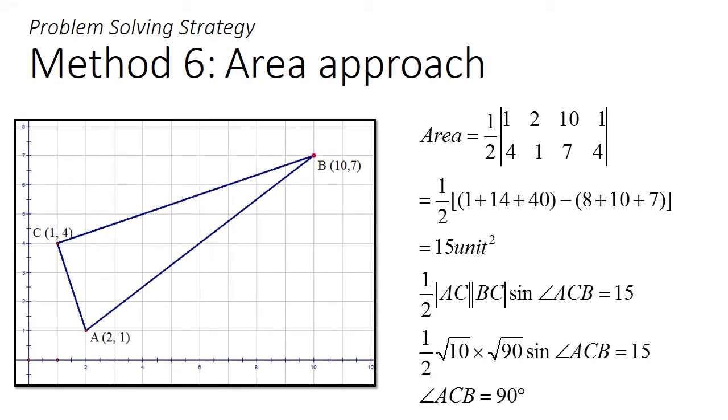You can also use a variety of approaches that make use of the area of the triangle, like the shoelace method or the trigonometric approach using half AB sine C. And through comparison of these various approaches to find the areas, you can conclude that angle ACB will be 90 degrees.